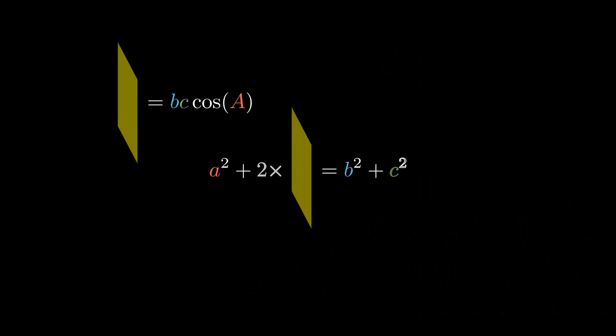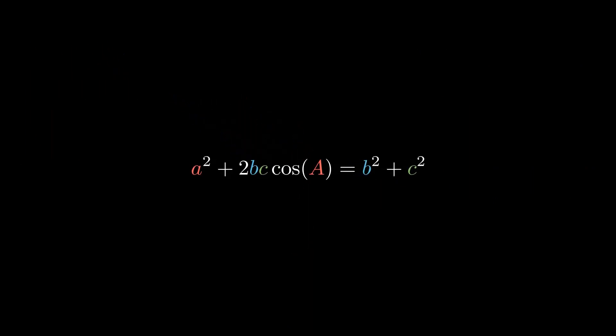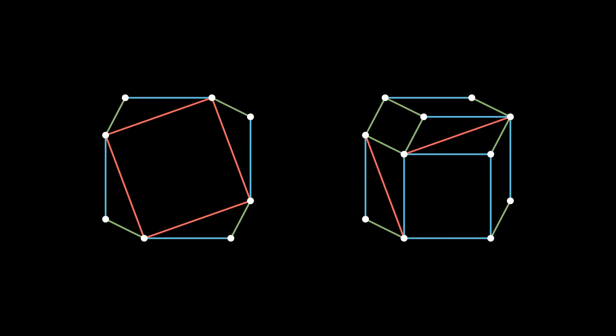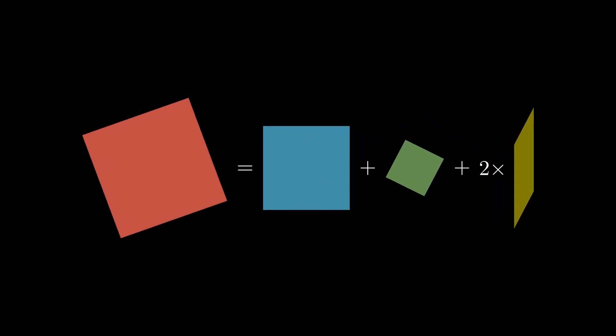Now back to the equation from before. We just found the law of cosines. When the angle a is obtuse, the picture looks a bit different. Now the right side has more parallelograms. Here's the equation for this case.